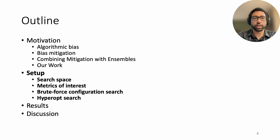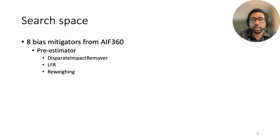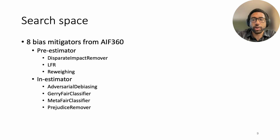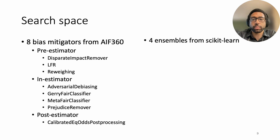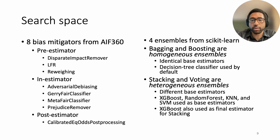Now for our experimental setup. For our search space, we considered eight bias mitigators from IBM's AIF360 toolkit. These are the three pre-estimator, four in-estimator, and one post-estimator mitigators shown here. We also utilize four ensemble learning techniques from scikit-learn: bagging, boosting, stacking, and voting. The first two are homogeneous ensembles that utilize identical base estimators, with which we use decision-tree classifiers by default. The last two are heterogeneous ensembles that use different base estimators. We use one each of XGBoost, Random Forest, K-Nearest Neighbors, and Support Vector Machine classifiers by default.